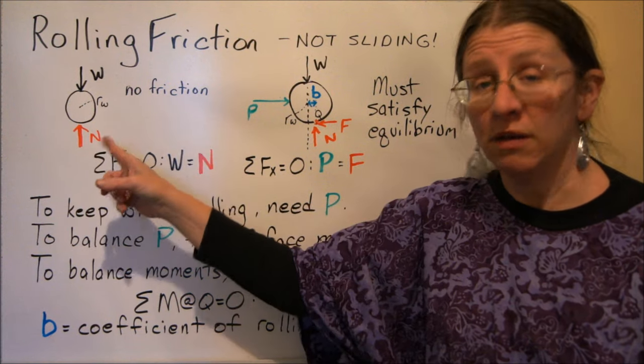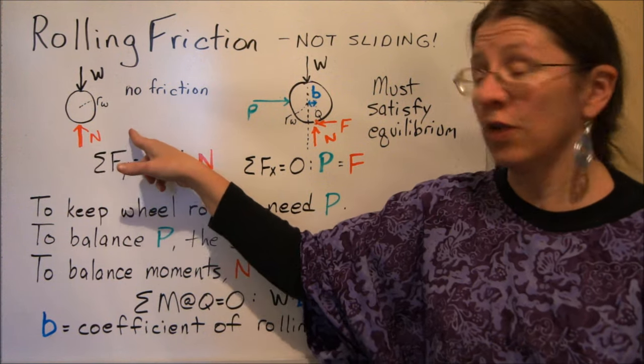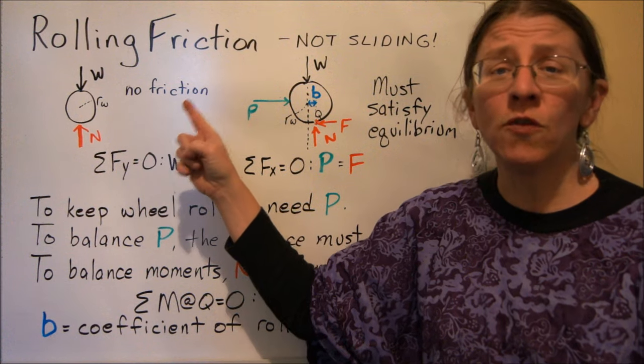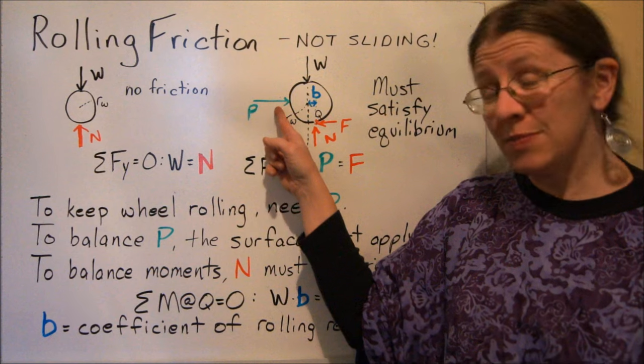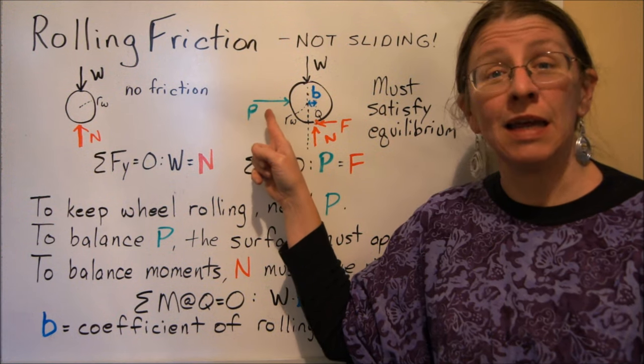The sum of the forces on this wheel is zero. So there's no friction. But we know, of course, in the real world that a wheel rolling like this will slow down. So there has to be some sort of P making it keep going.